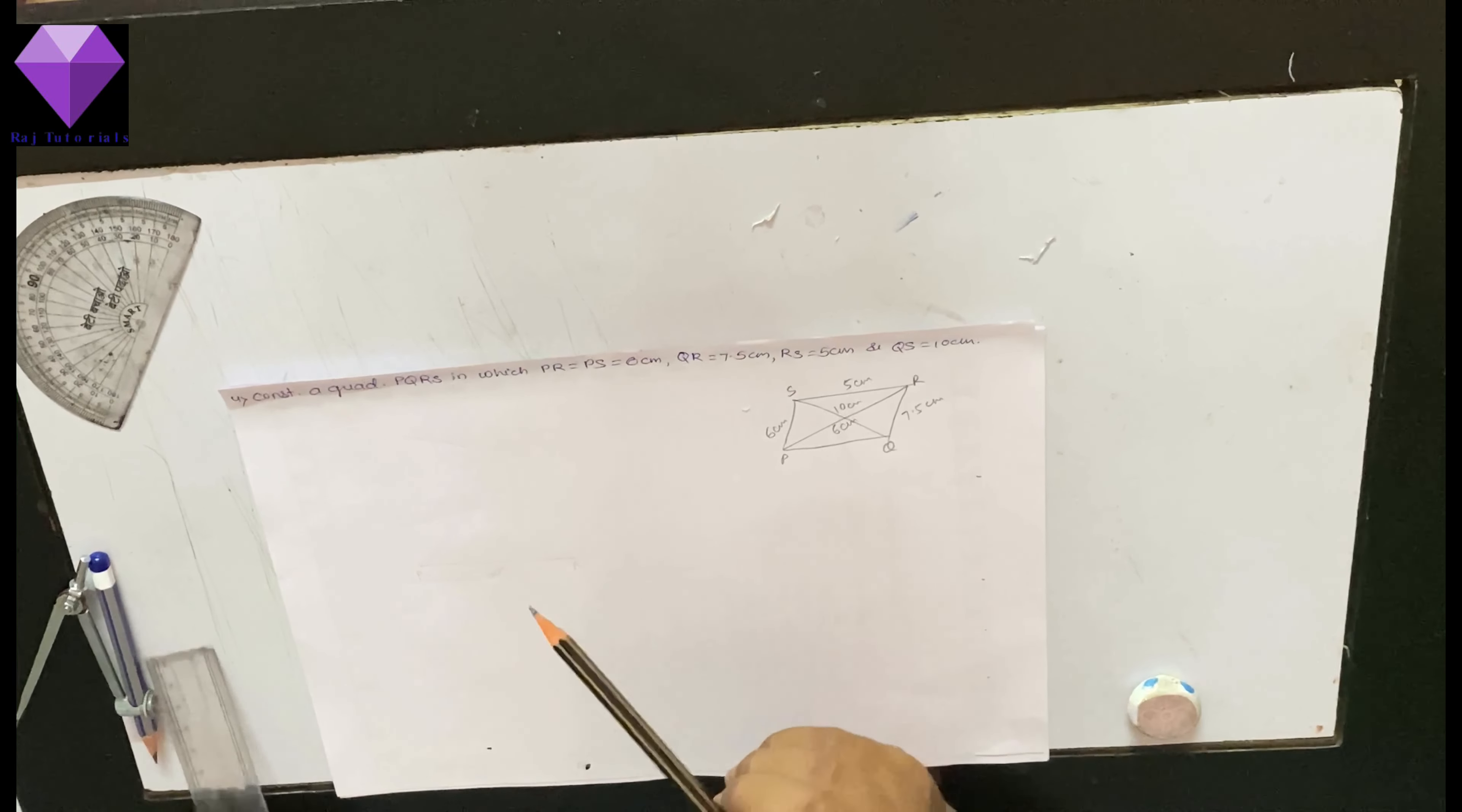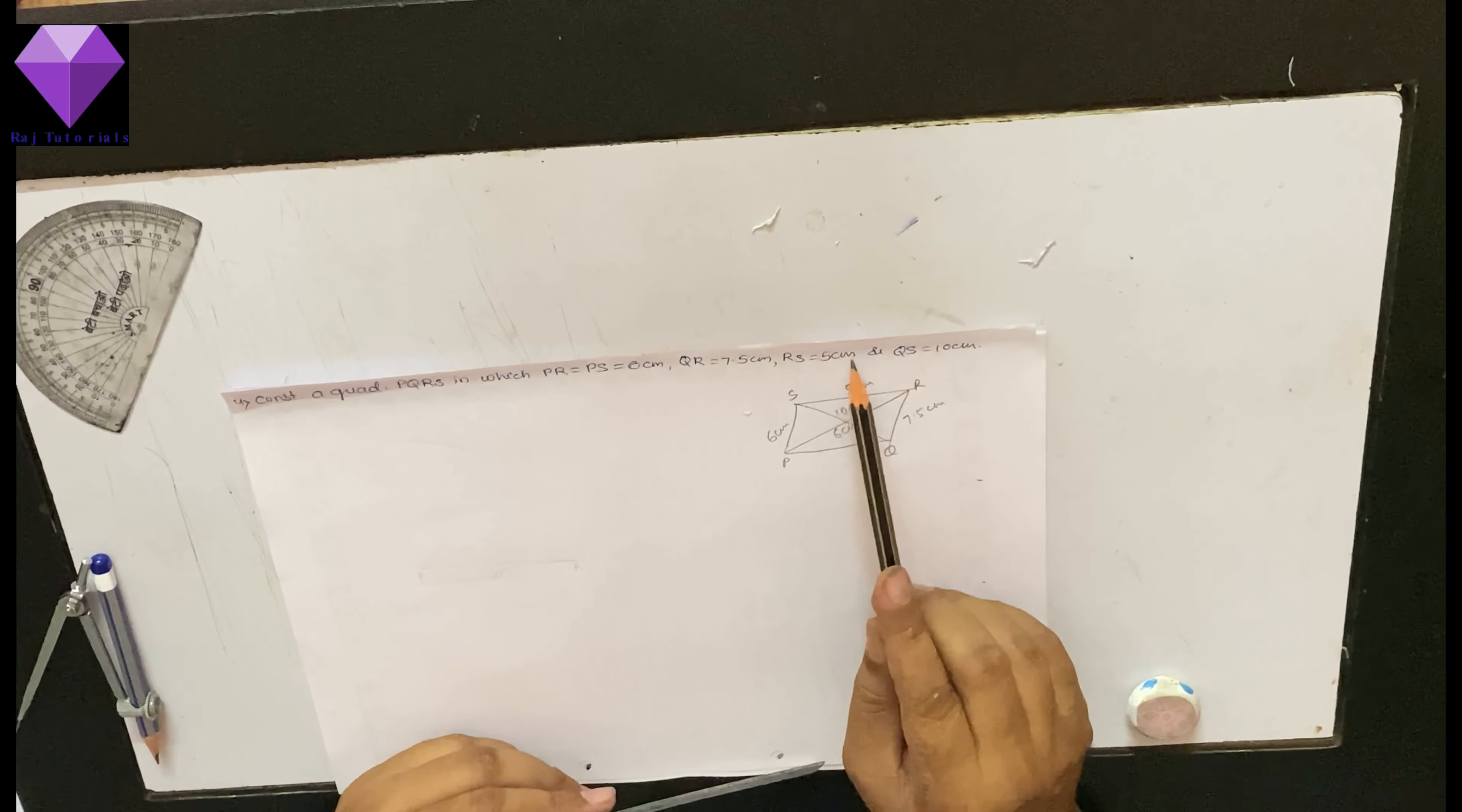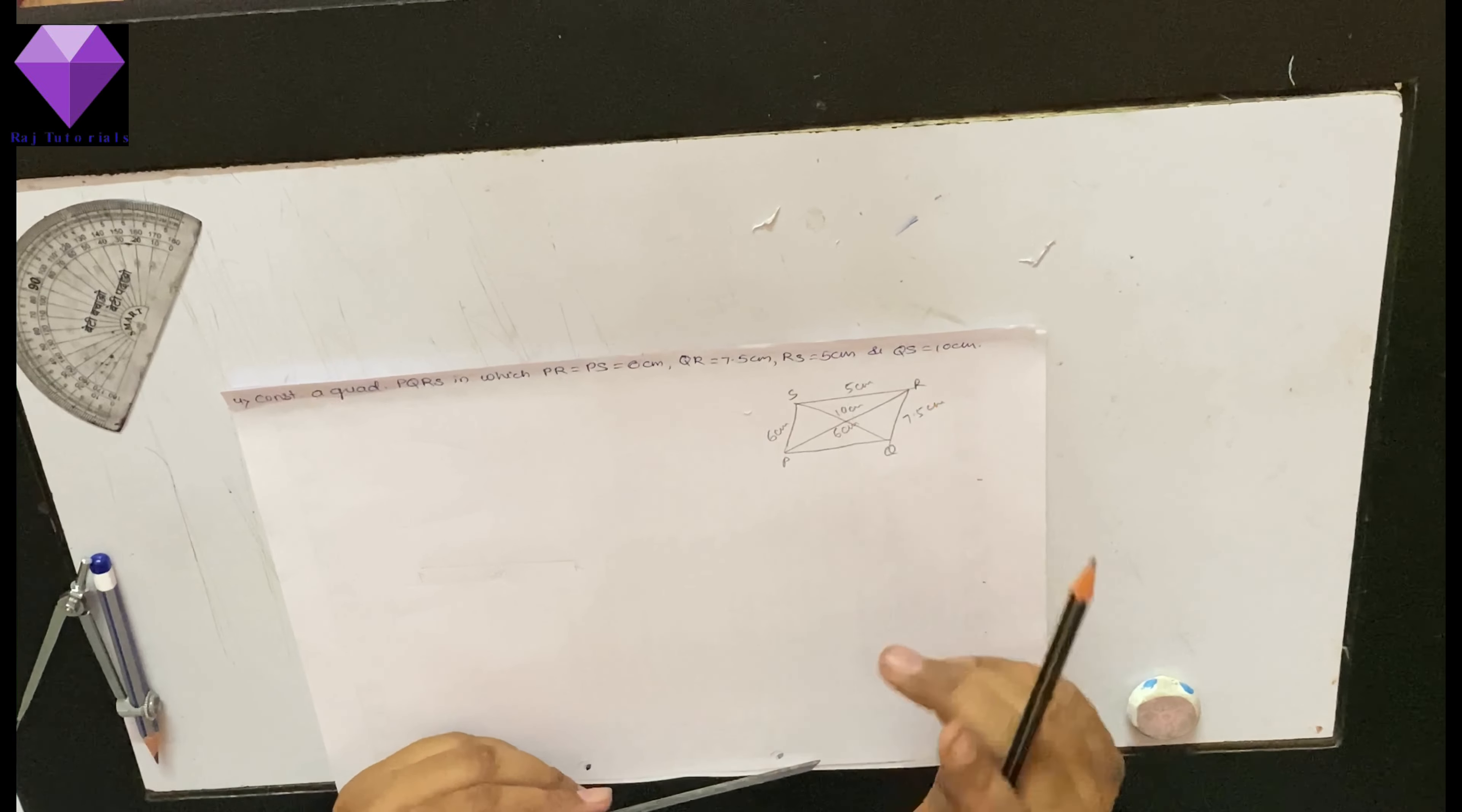Hello students, today I am going to construct a quadrilateral PQRS in which PR is equal to PS equal to 6 cm, QR is 7.5 cm, RS is 5 cm and QS is 10 cm.